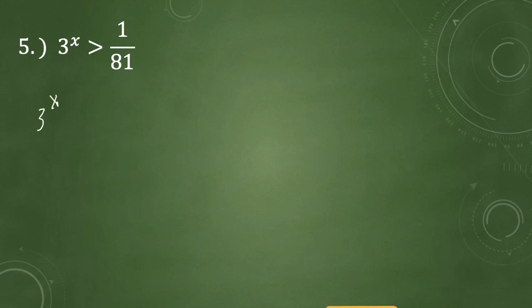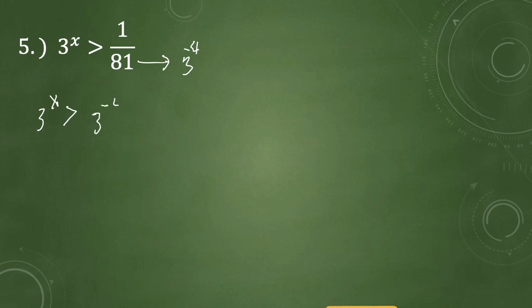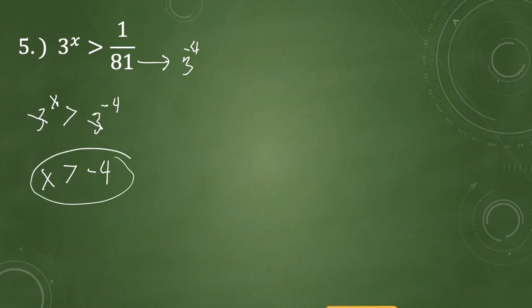For example number 5, we have 3 raised to x greater than 1 over 81. Copying the left side, we express 81 in exponential form as 3 raised to the fourth power. Taking the reciprocal of 3 to the fourth makes the exponent negative: 3 raised to negative 4. Now with the same base, we drop it, and x is greater than negative 4. That is the answer for number 5.